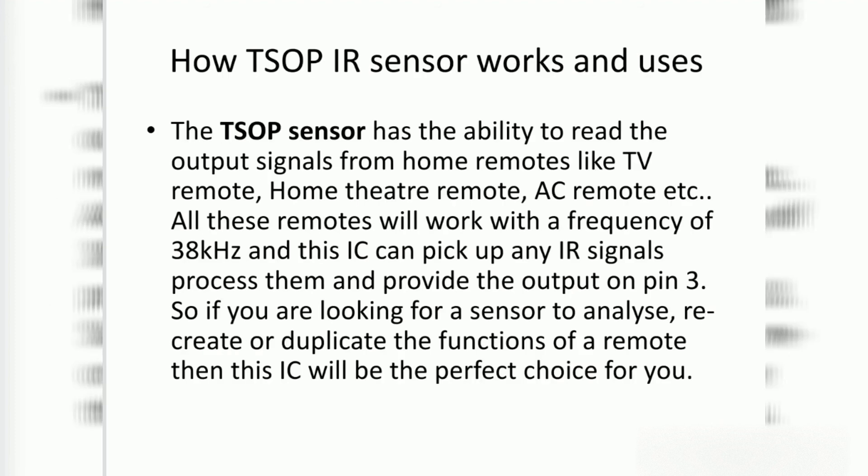Let us now discuss how TSOP IR sensor works. The TSOP sensor has the ability to read the output signals from home remotes like TV remote, home theater remote, AC remote, etc. All these remotes work with the frequency of 38 kHz and this IC can pick up any IR signals, process them, and provide the output on pin number 3.